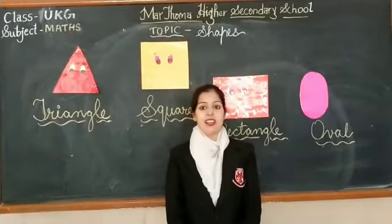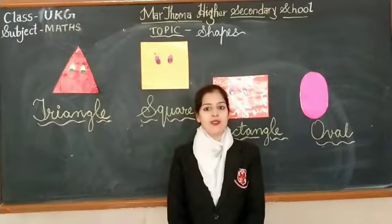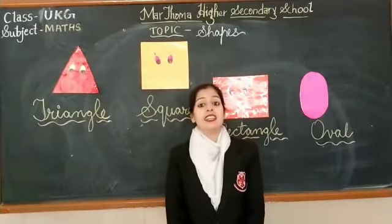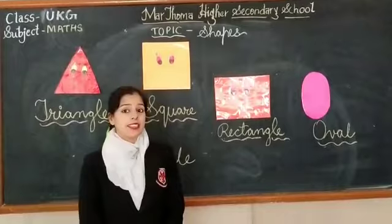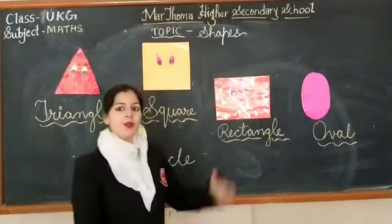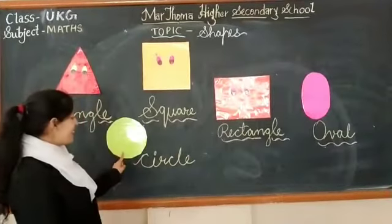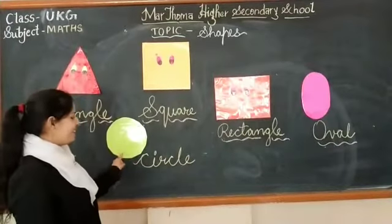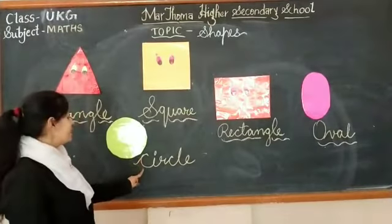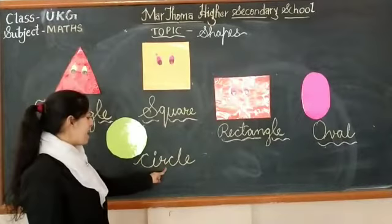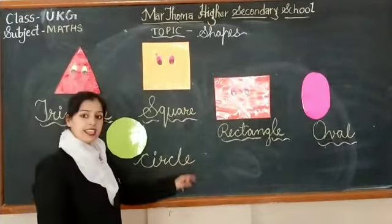Circle. Now children, which shape is that? Yes, circle. Now look here — circle. Which shape is this? Circle. C-I-R-C-L-E.